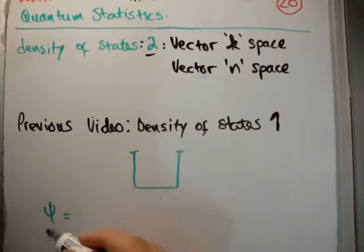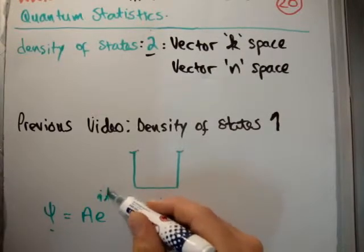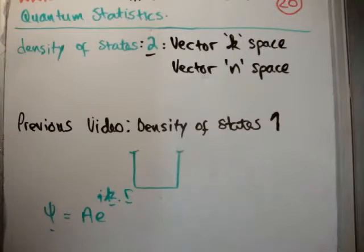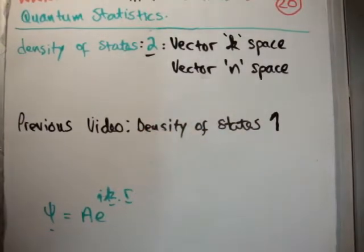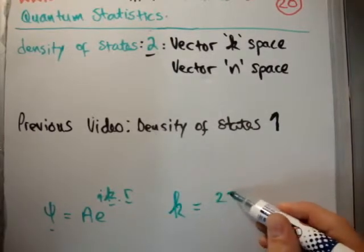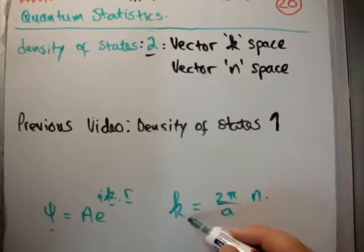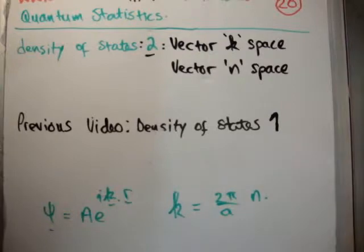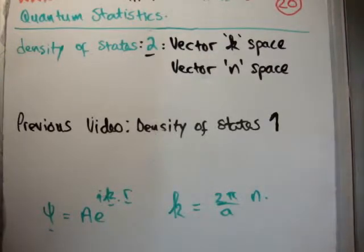We came up with the wave function of e to the i k dot r, where k and r were vectors. We found that k had limits on the values it could have, because k was equal to 2π over a times n. So k sub 1 was 2π over a times n sub 1, and so on. That's what we found.